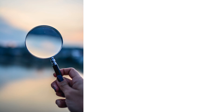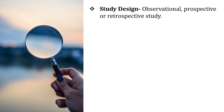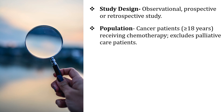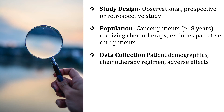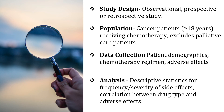Now let's see the methodology — you can adjust this according to your feasibility. Design your study as an observational prospective or retrospective study in an oncology unit. The population would be cancer patients aged 18 years or older receiving chemotherapy, excluding palliative care patients. Required data includes patient demographics, chemotherapy regimen, and adverse effects, collected via clinical assessment, questionnaires, and lab investigations. Analyze data through descriptive statistics for frequency and severity of side effects, and correlation between drug type and adverse effects. From this analysis, you can propose management strategies for each side effect. By studying chemotherapy side effects, we can develop better strategies to reduce discomfort and improve patient outcomes.